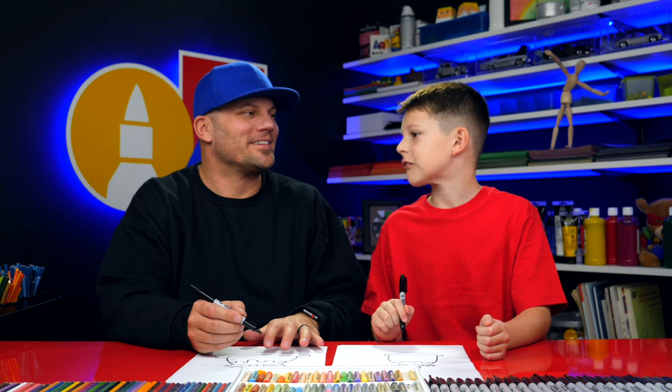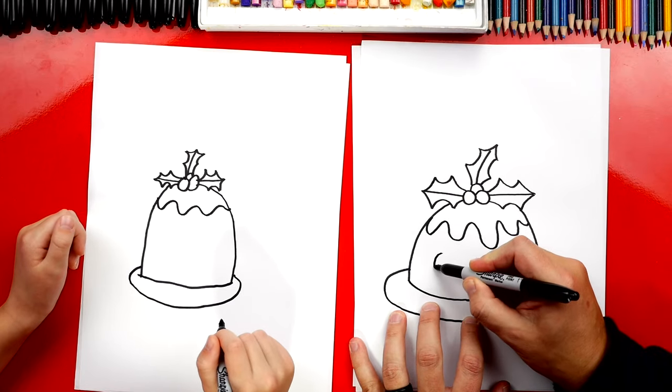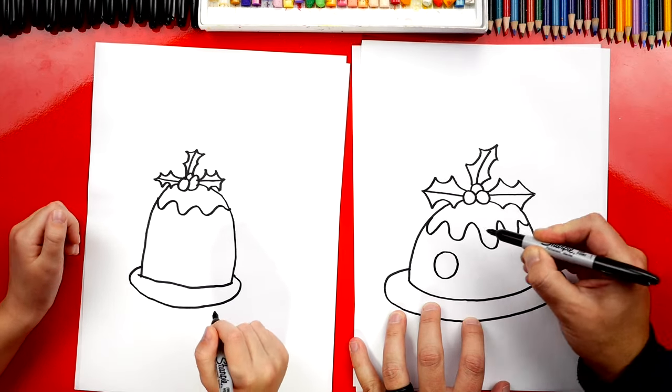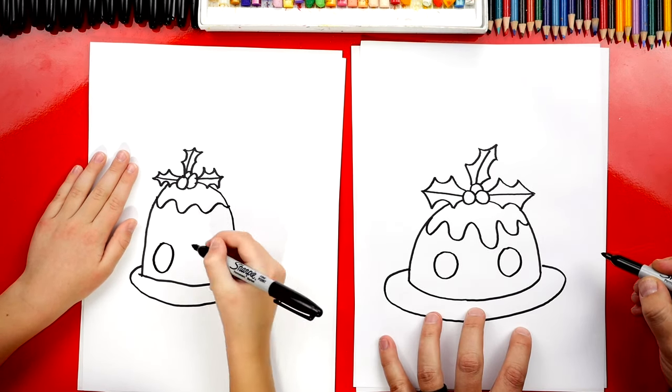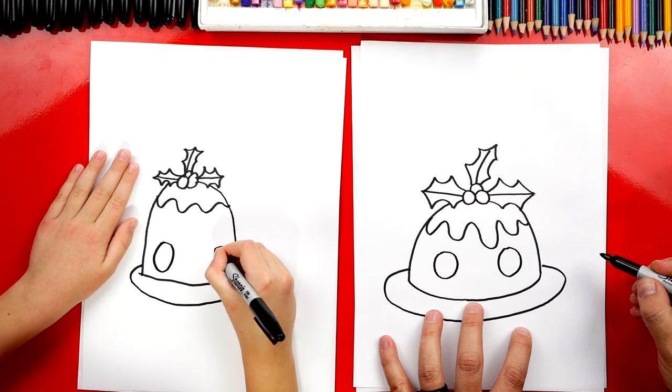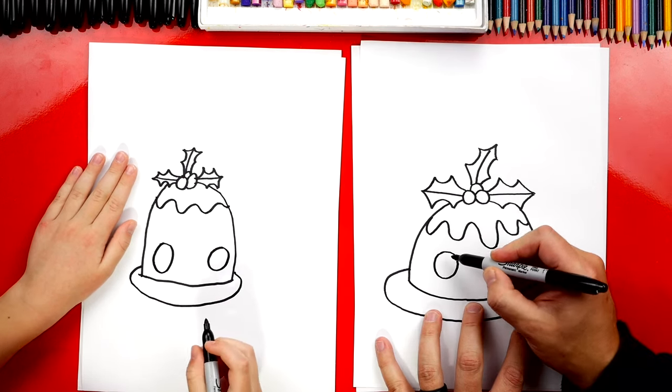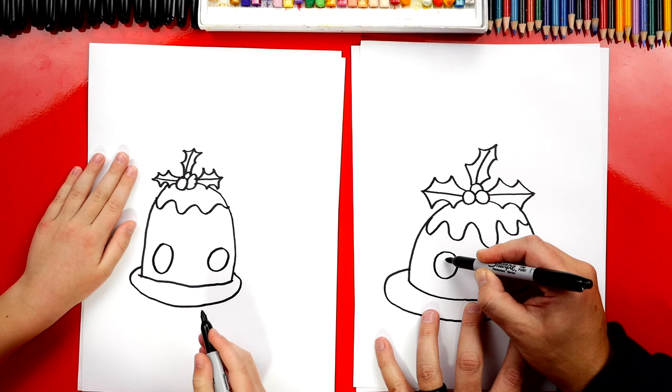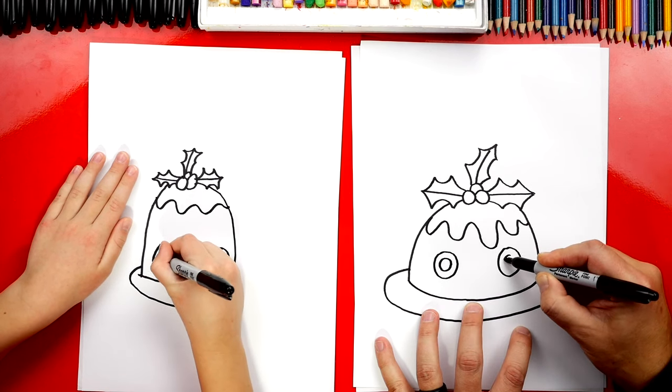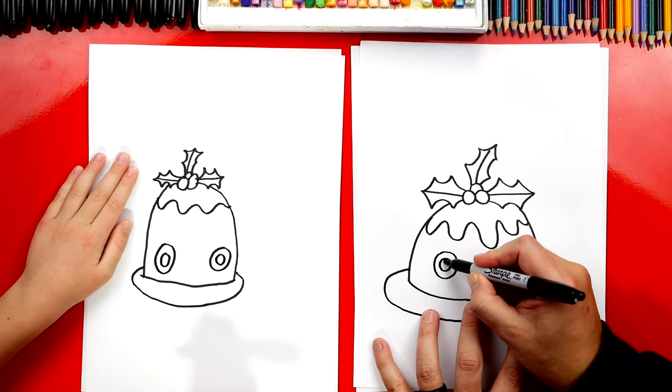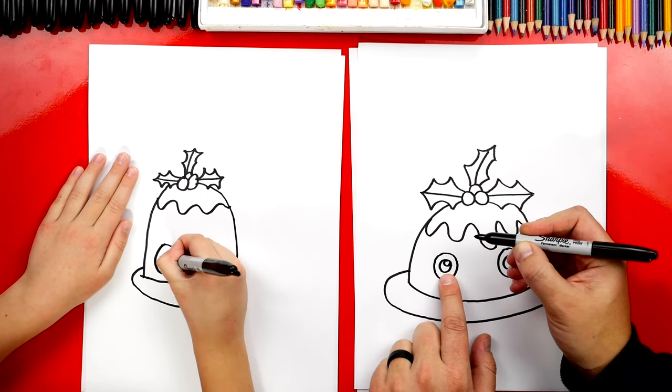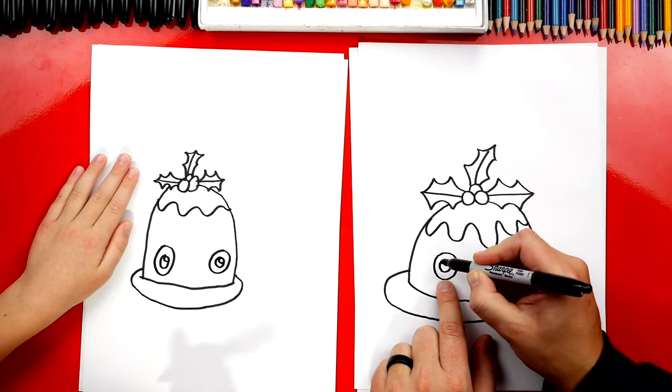Now we're gonna draw the funny face. I'm gonna draw a circle for one eye and another circle for the other eye over here. I like those big eyes. Then inside I'm gonna draw another circle that's smaller. And then inside of that we could draw even smaller circle in the top right of the pupil. And this is for the highlight.